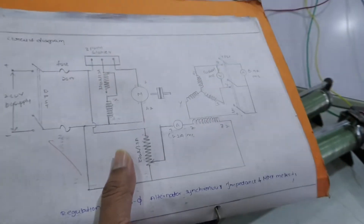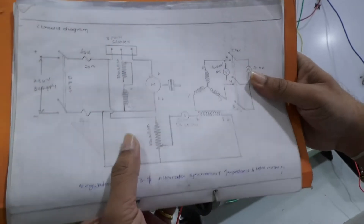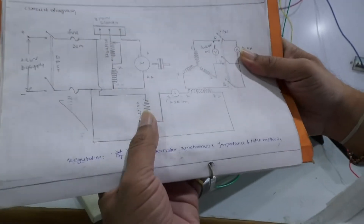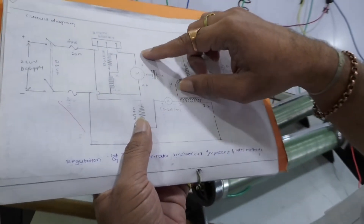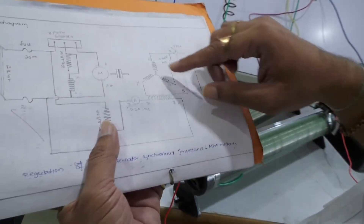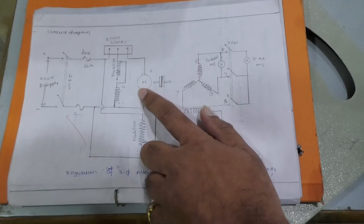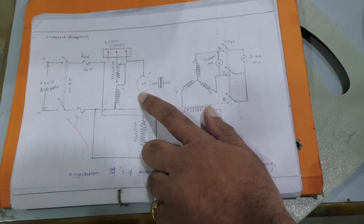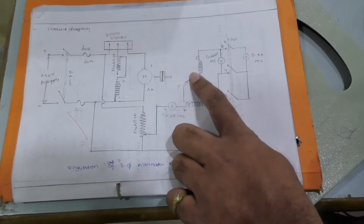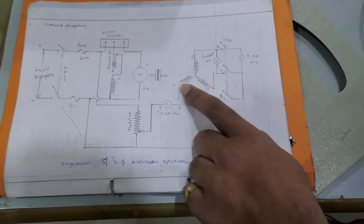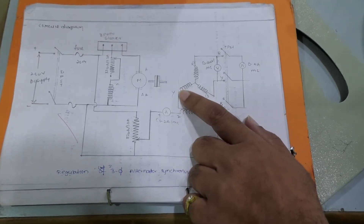With the help of this 3-point starter, we are going to start the motor. After starting, we have connected this to the motor and the alternator — motor and alternator are coupled here.